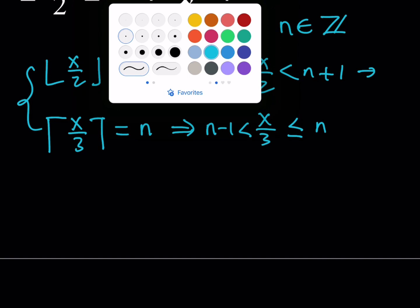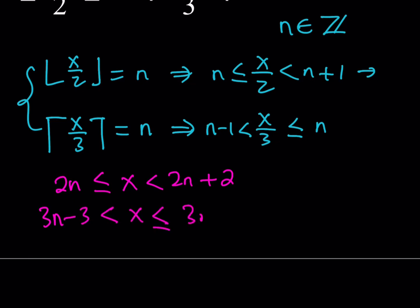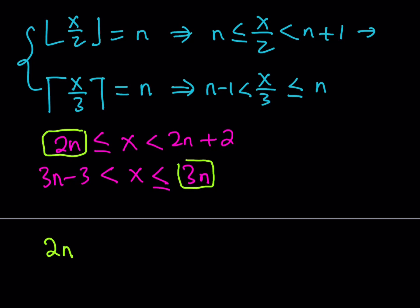Now let's isolate x in these inequalities. Multiplying by 2 gives 2n ≤ x < 2n plus 2. Multiplying the ceiling inequality by 3 gives 3n minus 3 < x ≤ 3n. We have two double inequalities. One strategy is to compare the lower bound of one with the upper bound of the other. For x to exist, we need 2n less than 3n, which implies n is greater than 0.